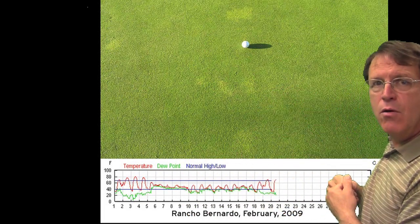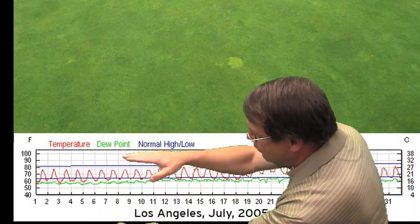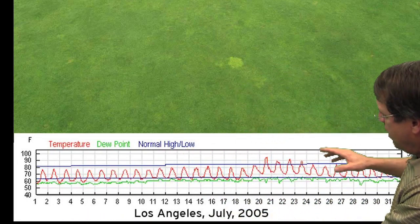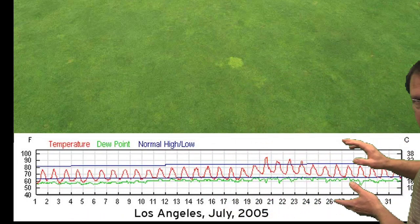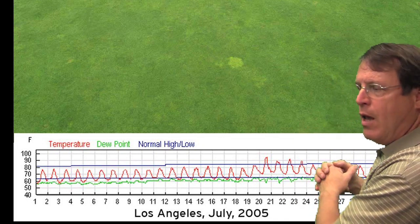For example, take a look at this one. In this case you can see the weather's going along and you watch the normal high and low temperatures, and then you get this spike up where the temperatures were too high. That resulted in the grass turning a little bit lighter green also.